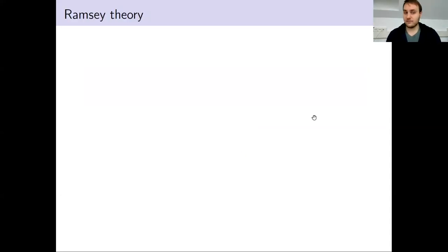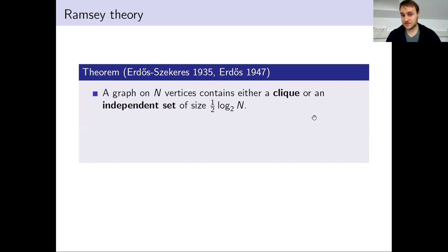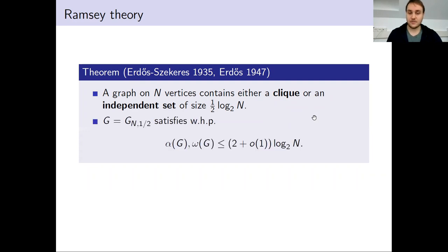As you are probably familiar with Ramsey theory, it studies the question: given a graph or some R-uniform hypergraph on n vertices, what is the size of the largest homogeneous set we are guaranteed to find, where by homogeneous set I mean either a clique or an independent set. In the case of graphs, we have the classical result of Erdős and Szekeres, which tells us that if we have a graph on n vertices, then it contains either a clique or independent set of size at least one-half log n. Erdős showed that this bound is actually the best possible up to a constant factor — he showed the existence of graphs where every clique and independent set have size at most two log n.